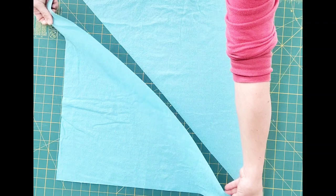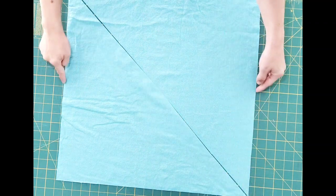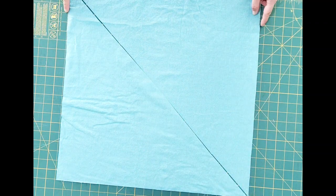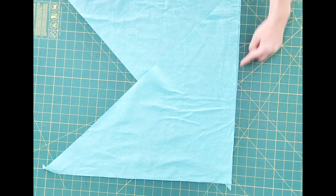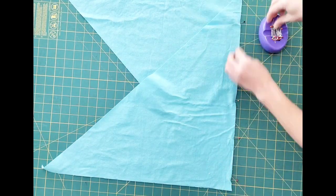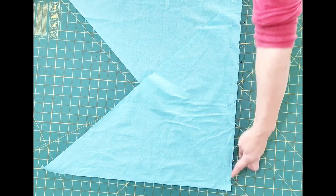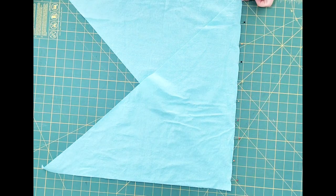Now I have two triangles. Now I'm going to place opposing ends of my triangles right sides together and pin. Now take it to your machine and sew this pinned edge with a quarter inch seam allowance.